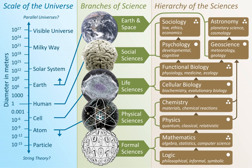Systems theory is the interdisciplinary study of systems in general, with the goal of elucidating principles that can be applied to all types of systems in all fields of research. The term does not yet have a well-established, precise meaning, but systems theory can reasonably be considered a specialization of systems thinking and a generalization of systems science. The term originates from Bernays's general system theory and is used in later efforts in other fields, such as the action theory of Alcott Parsons and the system theory of Nicholas McLuhan. In this context the word 'systems' is used to refer specifically to self-regulating systems, i.e. that are self-correcting through feedback. Self-regulating systems are found in nature, including the physiological systems of our body, in local and global ecosystems, and in climate.